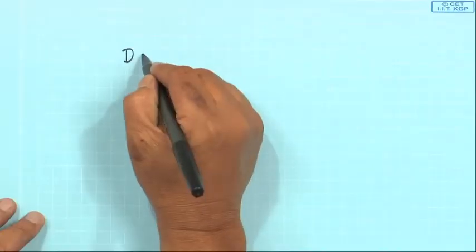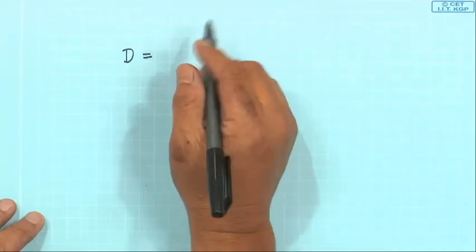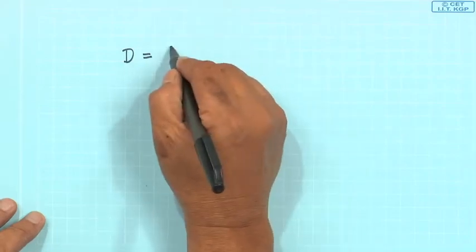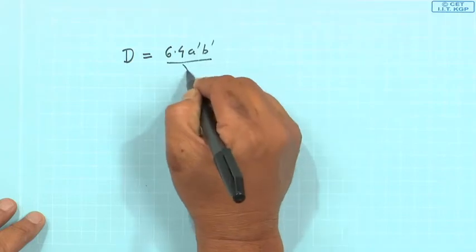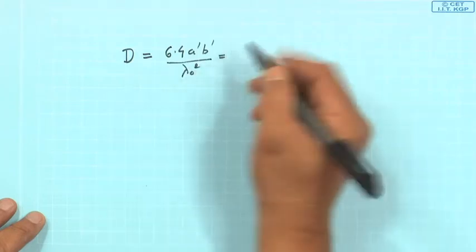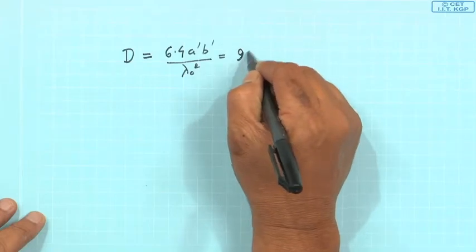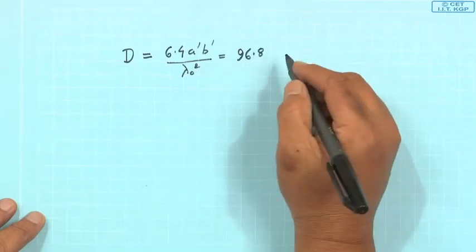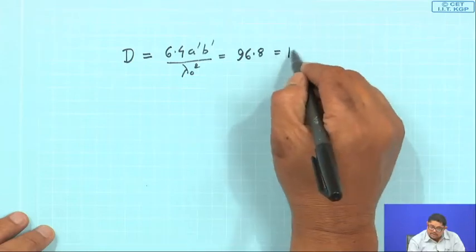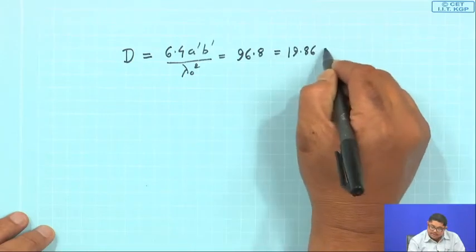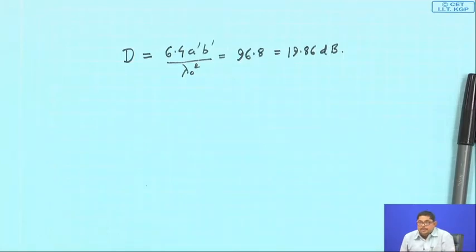Our formula says D and G are the same for a horn. D is 6.4·a'b'/λ₀². If you put all these values you will get something like 96.8 as the directivity, which is almost 19.86 dB.